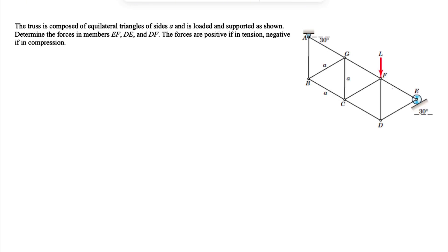Let's see how we can solve another question from the fourth chapter of the Miriam textbook engineering mechanics. So we have this truss that is composed of equilateral triangles of sides of A, and we know we have some loads on it, as we can see in the figure, and we need to determine the forces in member EF, so this member DE and DF.